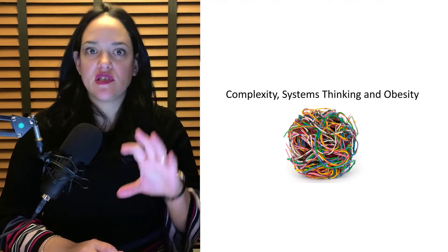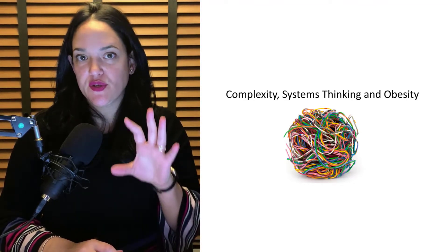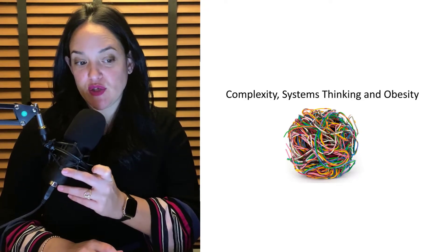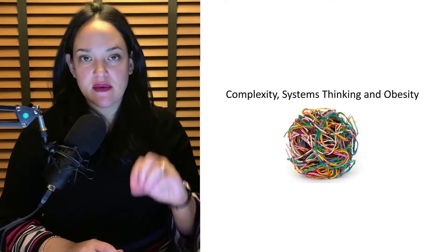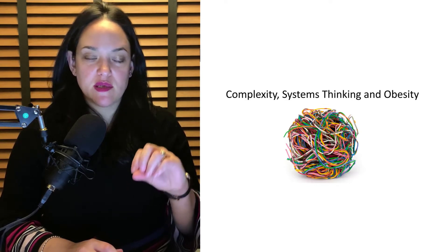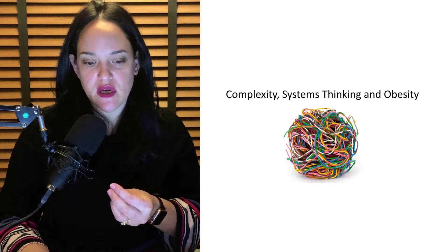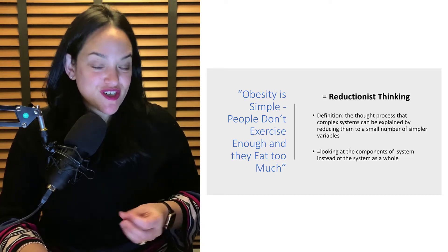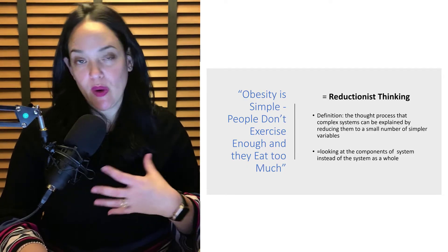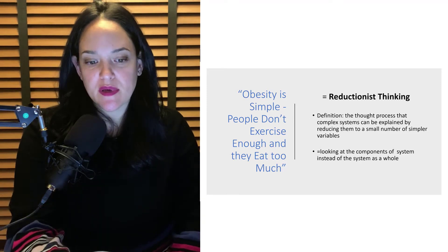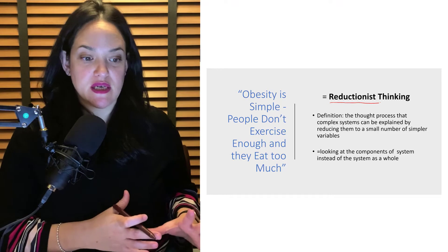Just like it's super important to start the semester with a discussion about weight stigma, it's also really important to start the semester with a conversation about complexity and systems thinking — something we've talked about in BPK 340 — and that's really essential to the study of obesity. Unfortunately, typically when we talk about obesity or any kind of weight-related matters, we typically use something called reductionist thinking, which is not systems thinking.